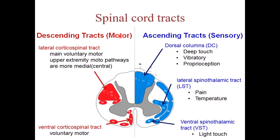Signals carried by the spinal nerves travel through the spinal cord via neural pathways called the spinal cord tracts. These tracts are found within the white matter and the white matter is divided into three funiculi: anterior, lateral, and posterior. They are either ascending tracts, which deliver information from the periphery to the brain, or descending tracts, which deliver information from the brain to the peripheral body. Some of the most important ascending tracts are the dorsal column, the lateral spinothalamic tract, and the ventral spinothalamic tract. Some of the most important descending tracts are the lateral corticospinal and the ventral corticospinal tract.